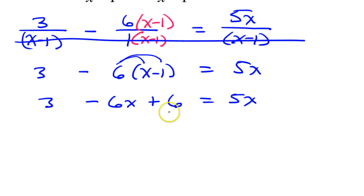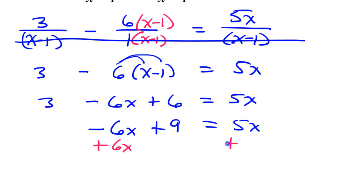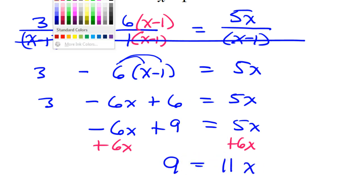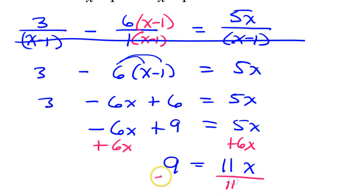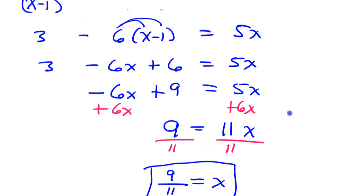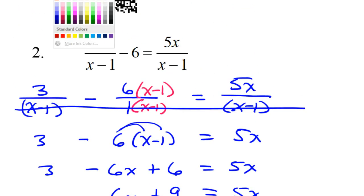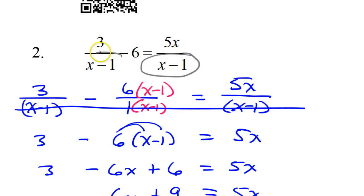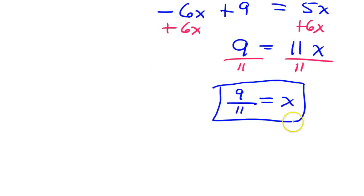Combining like terms: I have the 3 and the 6, that's 9. So I have negative 6x plus 9 is equal to 5x. Let's get these x's together by adding 6x to both sides. That'll give us 9 is equal to 11x. Then we would divide both sides by 11, and that's going to be the final answer — x is equal to 9 elevenths. Let's take a quick look to make sure this is not extraneous. There's only one excluded value, because I have only one denominator. Setting that equal to 0, I see that x cannot equal 1. And that's not what this is, so we're good.